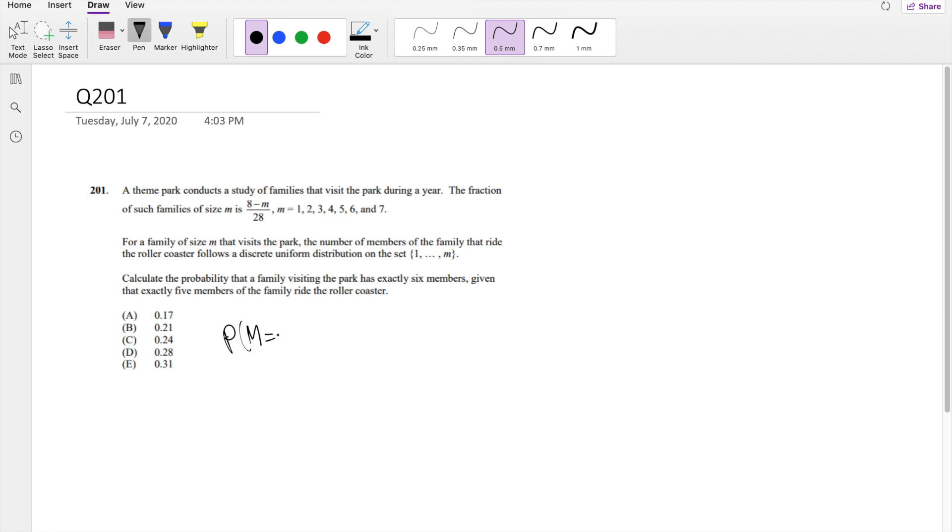M is equal to 6, given that exactly, I'm going to denote n, n as the number of people that ride the roller coaster. Oh my goodness, my handwriting, but it's okay. Okay, n is equal to 5.